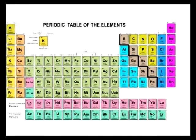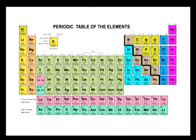Remember, period is a row. So period 1, you've got hydrogen and then you've got helium, and there's a giant gap in the middle.